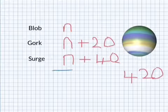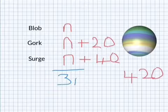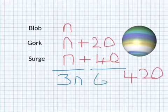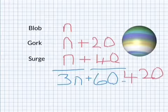So, we add up the N's. There's 3N. And we add up the numbers, so it's 60. So, 3N plus 60 equals 420 metres.